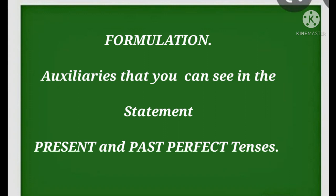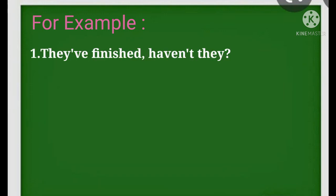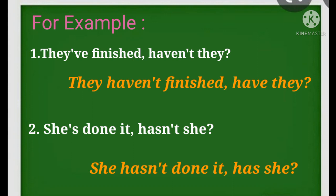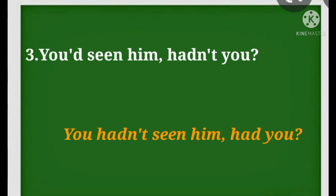The next group where we can see the auxiliary in the statement is the present and past perfect tenses. Let's have a look at the examples: they've finished, haven't they? They haven't finished, have they? She's done it, hasn't she? She hasn't done it, has she? You'd seen him, hadn't you? You hadn't seen him, had you?